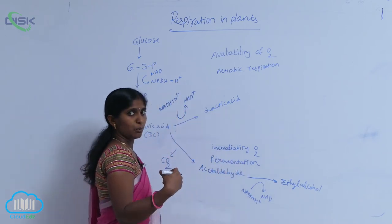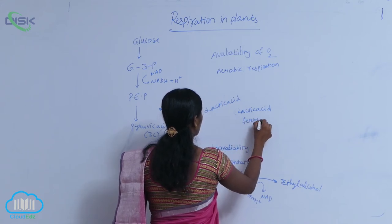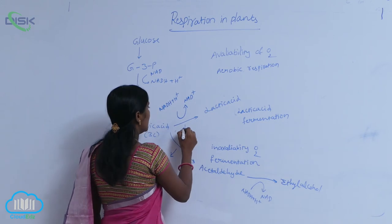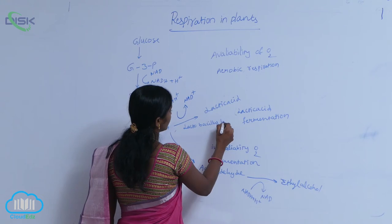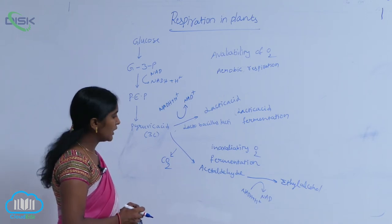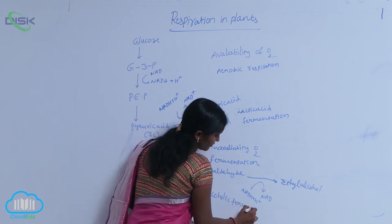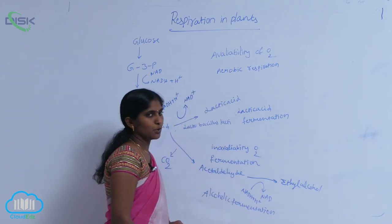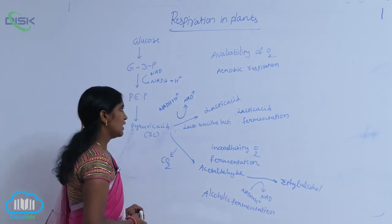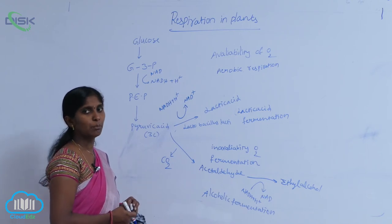If lactic acid is the end product of fermentation, that is lactic acid fermentation. The bacteria involved here is Lactobacillus lactis. If ethyl alcohol is the end product of fermentation, that is alcoholic fermentation. If acetic acid is produced, that is acetic acid fermentation, and the involved bacteria is Acetobacter acetyl. Different microorganisms are involved in fermentation processes to produce different types of end products.